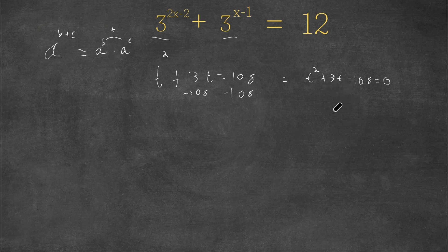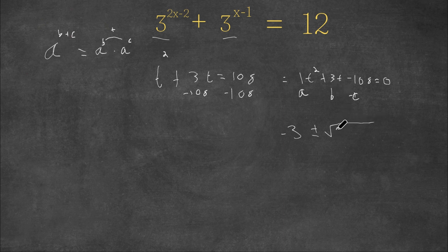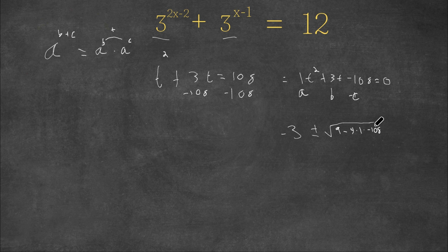Let's find our values using the quadratic formula: negative b plus or minus the square root of b squared minus 4ac, all over 2a. Here a equals 1, b equals 3, and c equals negative 108. So we get negative 3 plus or minus the square root of 3 squared minus 4 times 1 times negative 108, all divided by 2 times 1, which is 2.